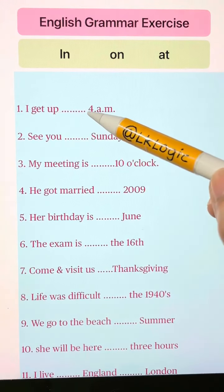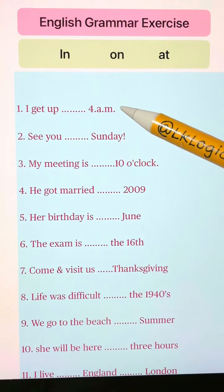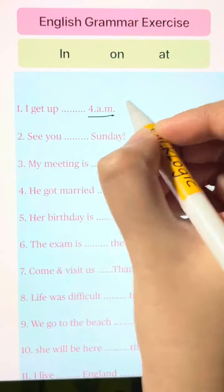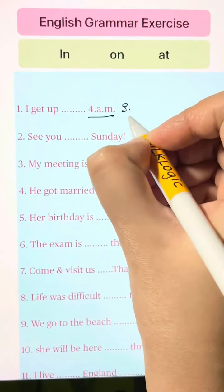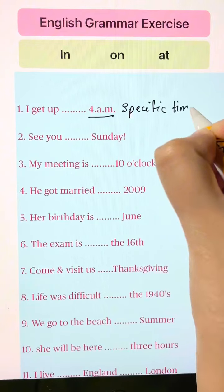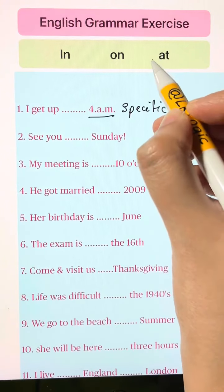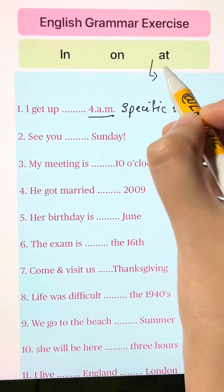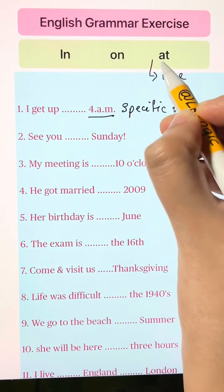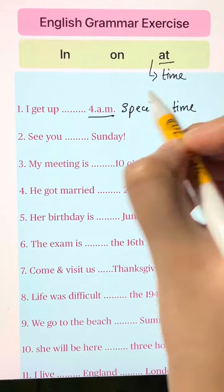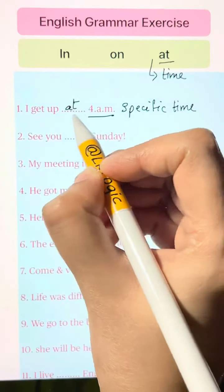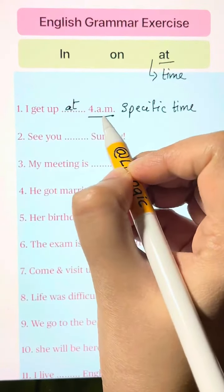I get up blank 4 a.m. Here we have a specific time mentioned. Whenever we have a specific time mentioned, we use 'at.' I get up at 4 a.m.